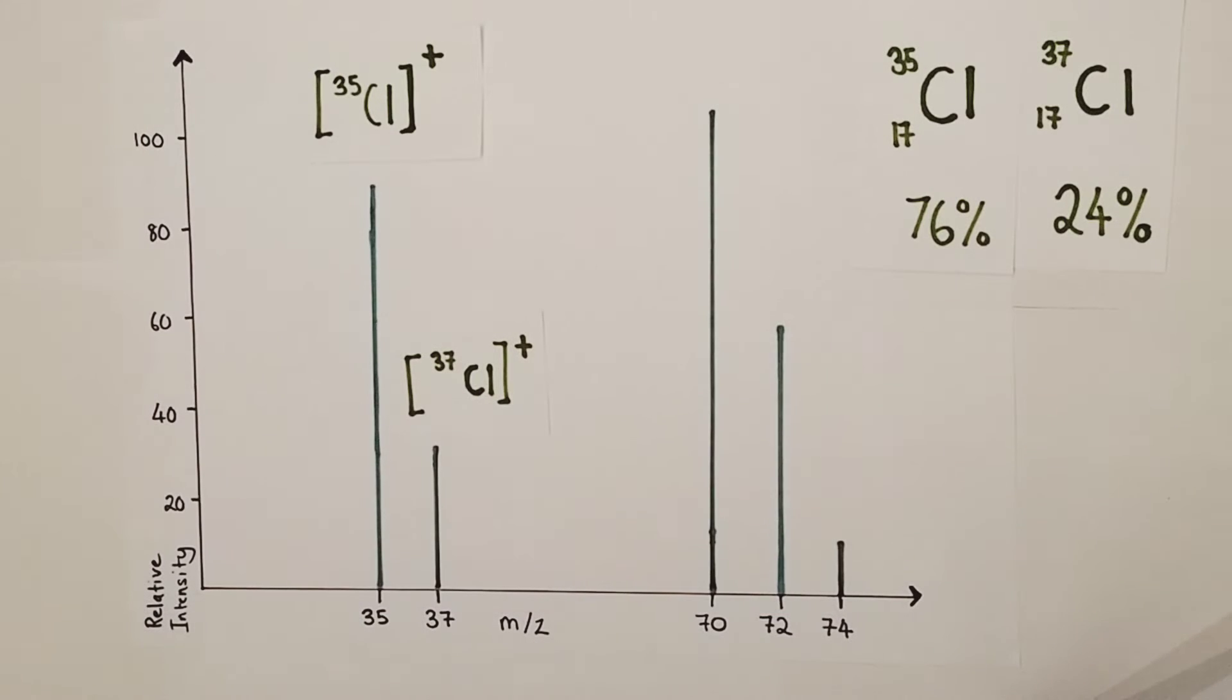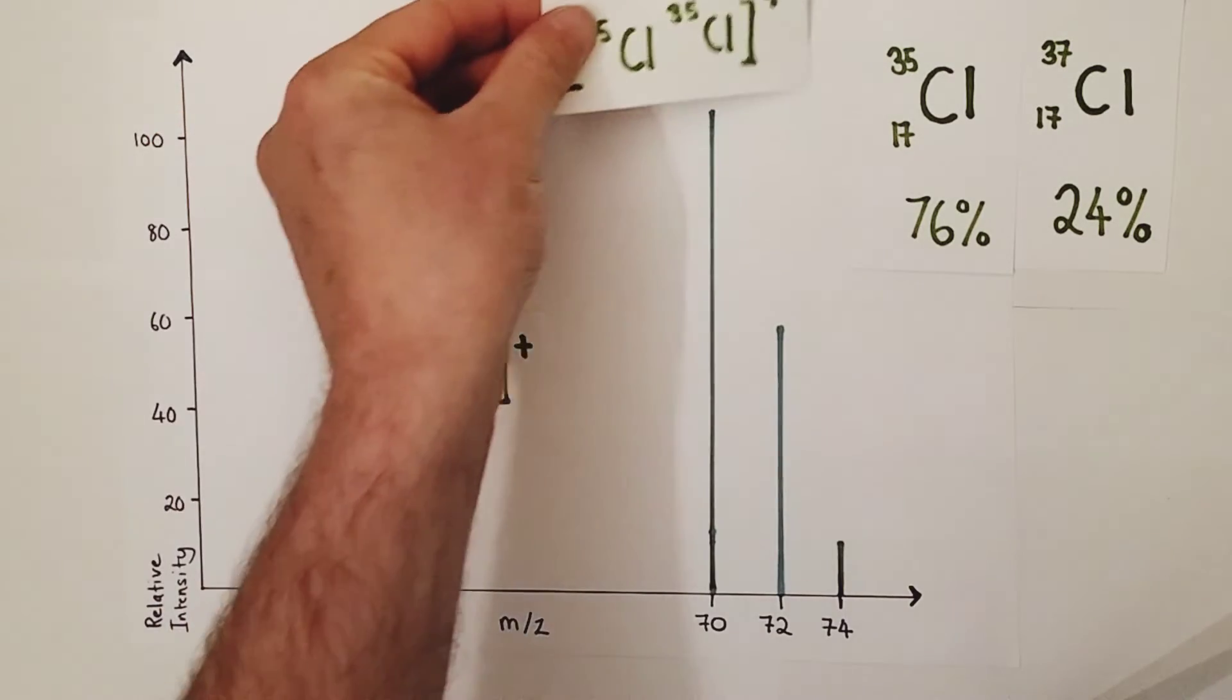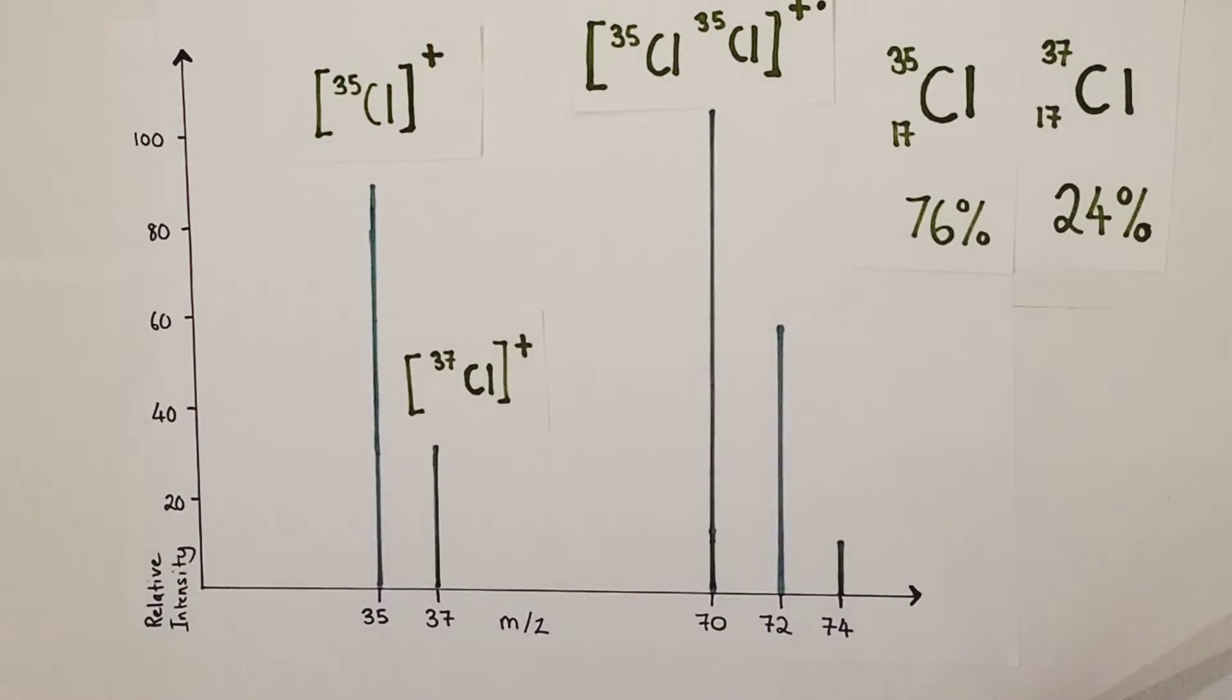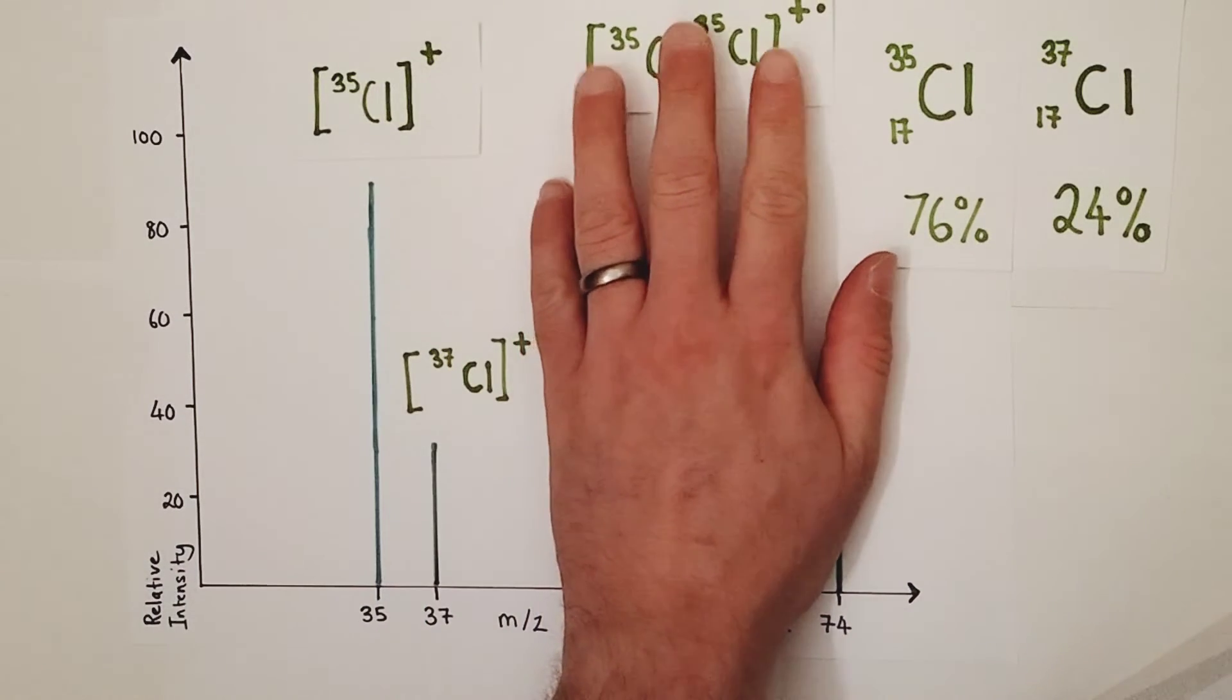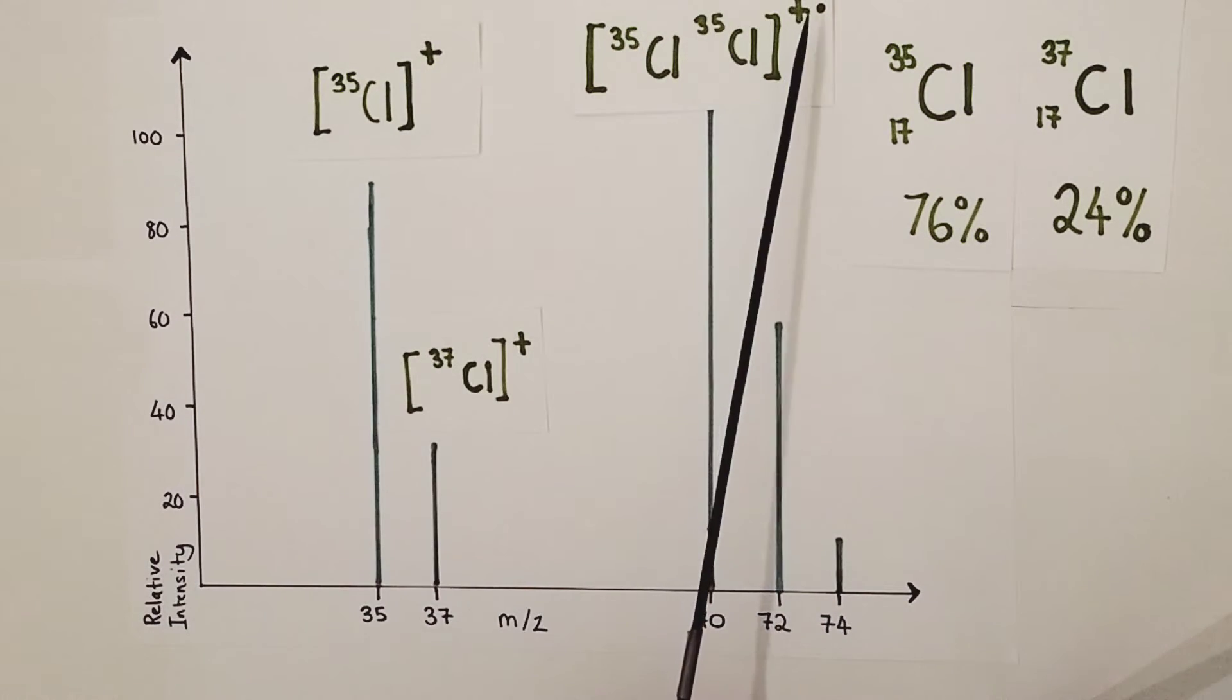Now let's move further up the spectrum. We've got another prominent peak at a mass charge ratio of 70. That must be being caused by a full or whole chlorine molecule. To be a relative mass of 70 it must be two chlorine-35 atoms covalently bonded together and they've had an electron knocked off to form a positive charged ion.